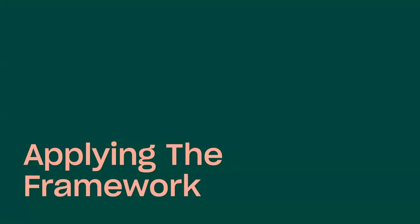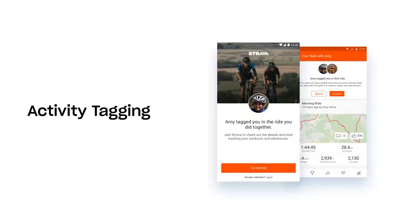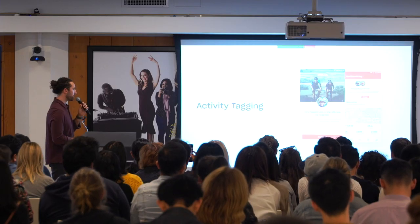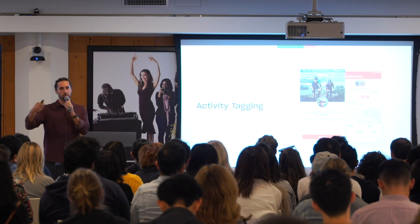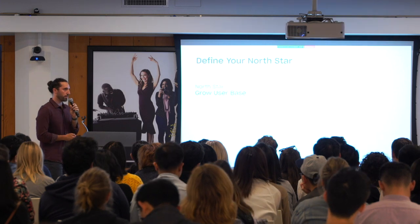This is our last section: applying the framework through a concrete example from my time at Strava. The project is activity tagging — an initial experiment on the growth team for acquisition. It allowed someone who went out and ran or rode with someone to add them if that person wasn't on Strava.